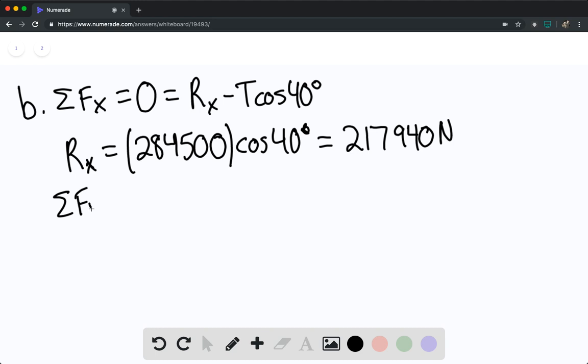The sum of forces in the y is a bit more complicated. We have R sub y plus T sine of 40 degrees minus mass sub b times g minus mass sub t times g.